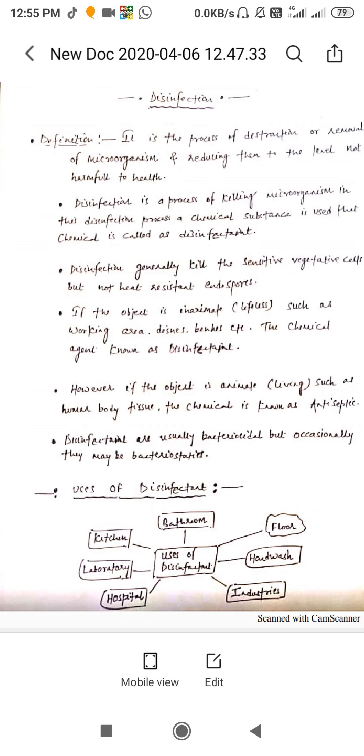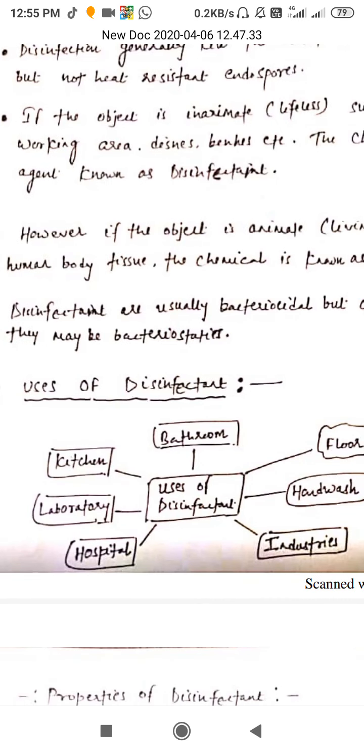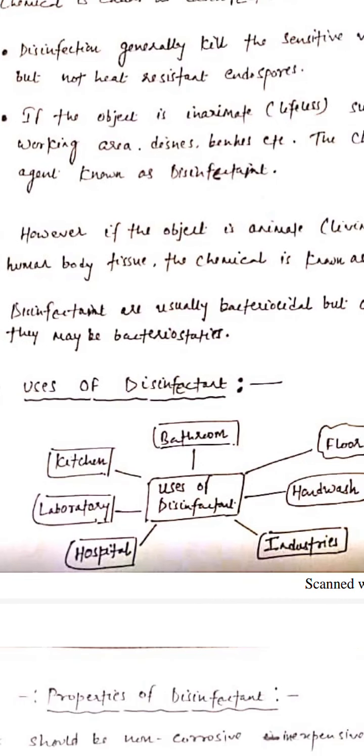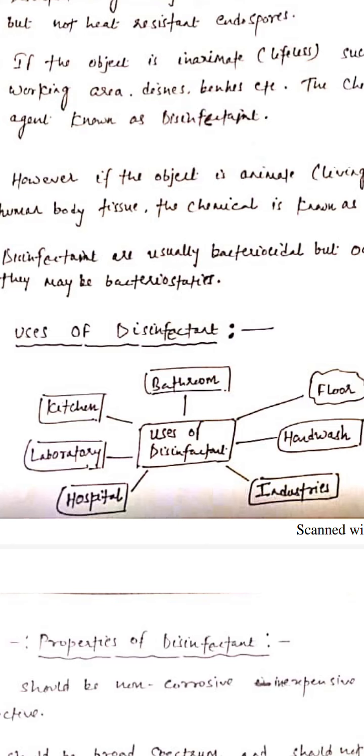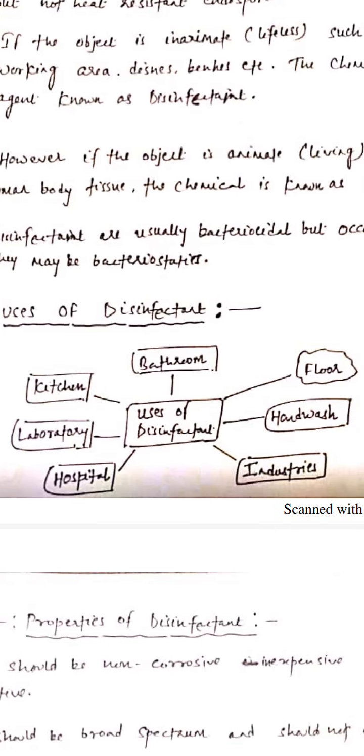Now, uses of disinfectant. Disinfectants are used on large scale in various fields. They can be used in kitchens, bathrooms as cleaners, on floors, as hand wash. They can be used in industries like food industry, brewery industry. They are also used in hospitals and laboratories.